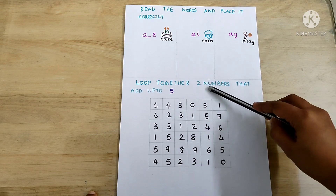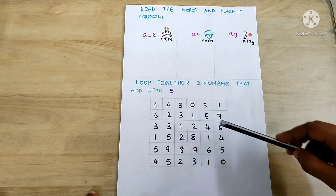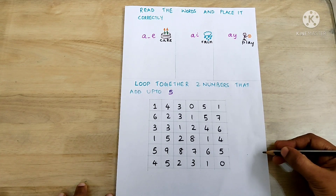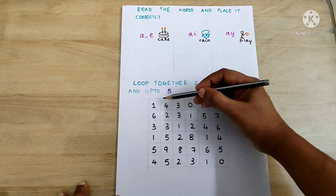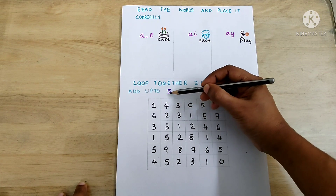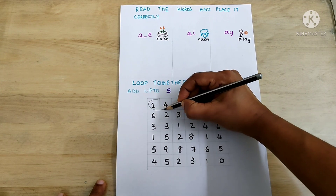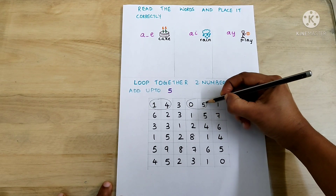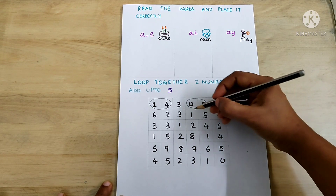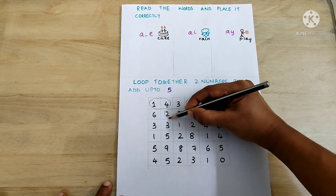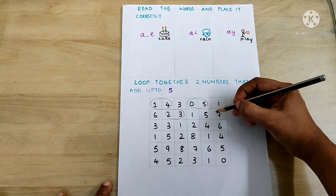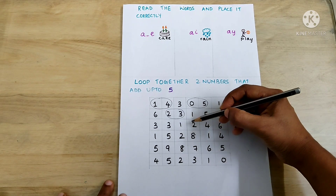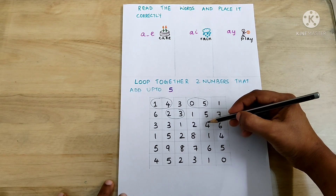Look and loop together two numbers that add up to five. Kids have to find and circle two numbers whose sum is five. For example, 1 plus 4 adds up to five — loop those two numbers. Zero plus five equals five. Two plus three equals five. Zero plus five equals five. Two plus three equals five.